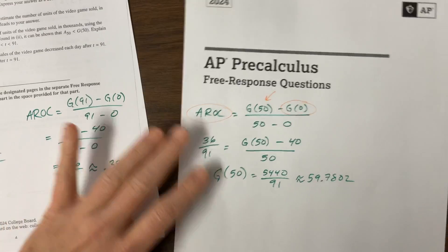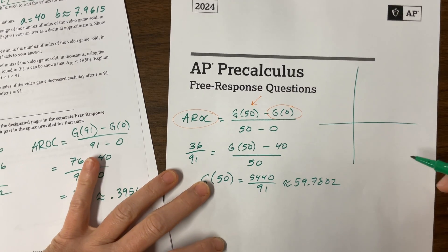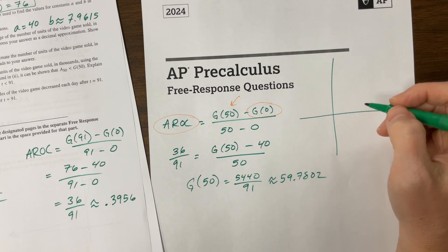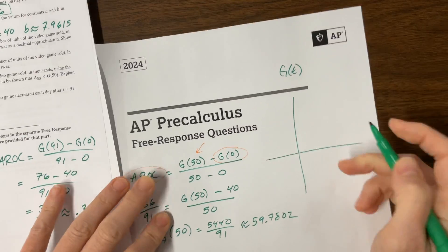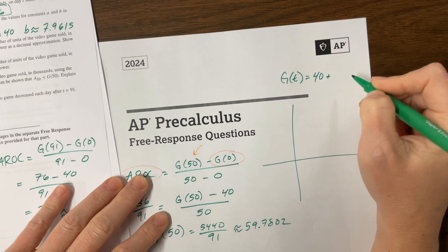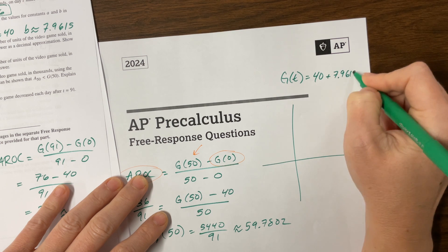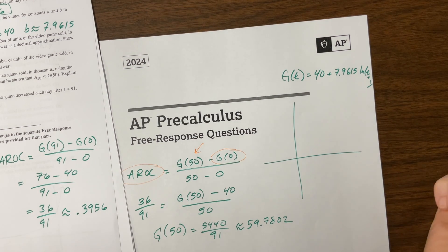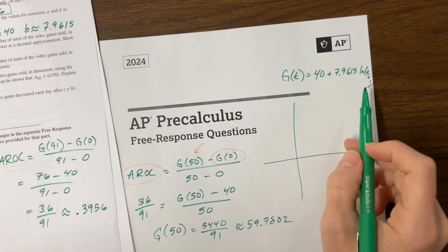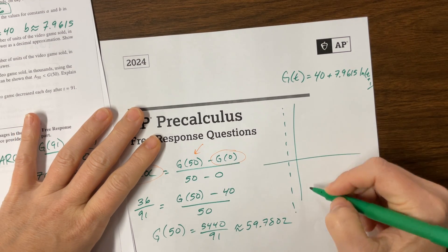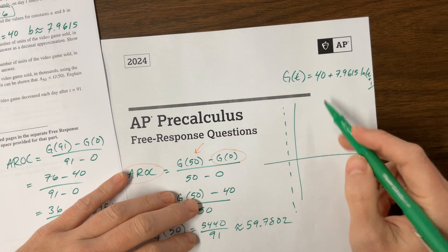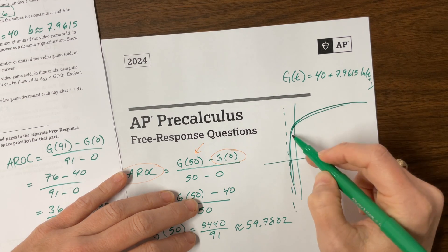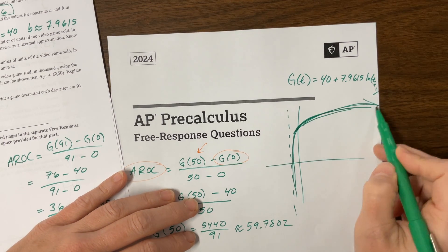Now thinking through this — the graph is a log function shifted to the left one. The equation is g of t approximately equals 40 plus 7.9615 times the natural log of t plus 1. It's got an asymptote at t equals negative 1. At t equals 0, g is 40. It's this log function that's growing slowly — increasing and concave down, which is going to be important.